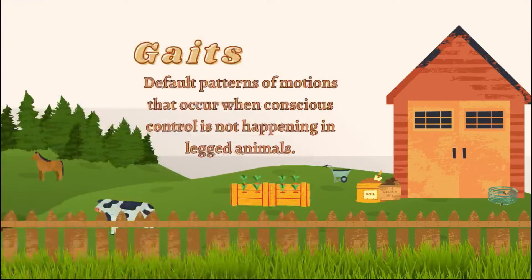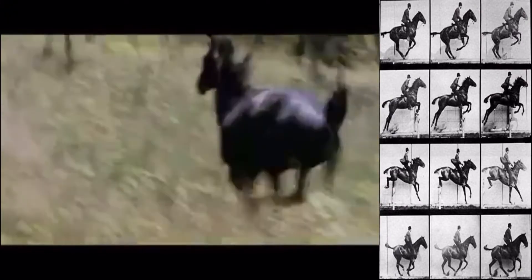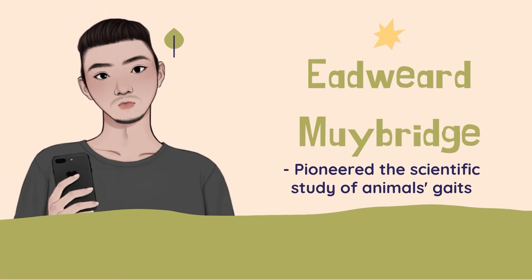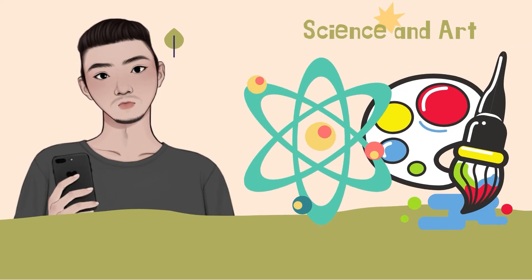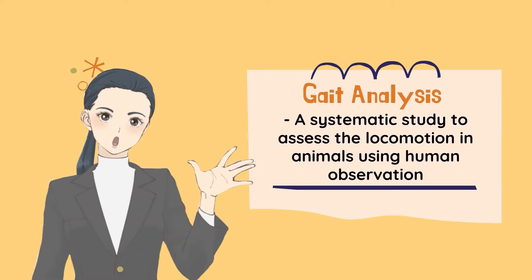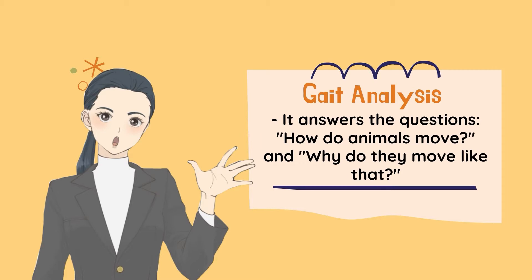We have gaits, for example. According to Ian Stewart, gait is the term used for describing the default patterns of motions that occur when conscious control is not happening in legged animals. For example, when horses gallop, there are times when all of its feet are off the ground. Now it's time that we learn from Edouard Muybridge, who pioneered the scientific study of gaits, or the locomotion in the actions of animals in nature. He adopted a mechanical device known as a zoetrope or zoopraxiscope, a movie projector to display them as moving pictures. By this, he discovered both science and art. We also have gait analysis, which is a systematic study created in order to assess the locomotion in animals using the eye and the brain of the observer.